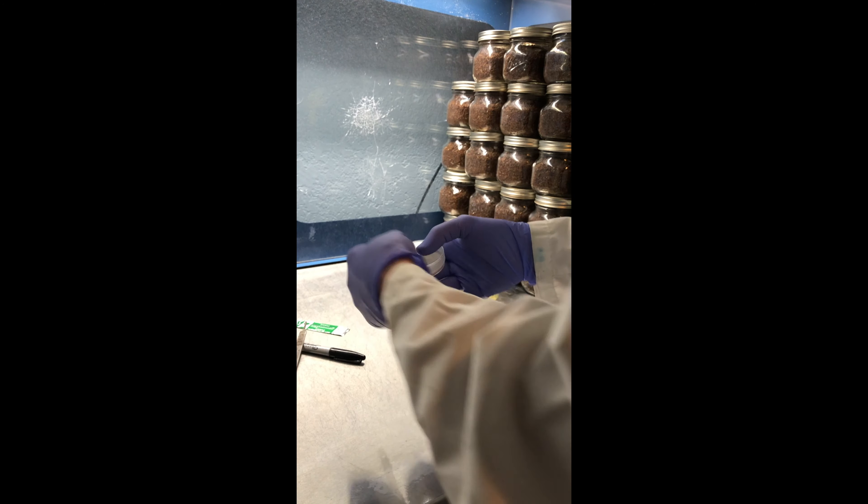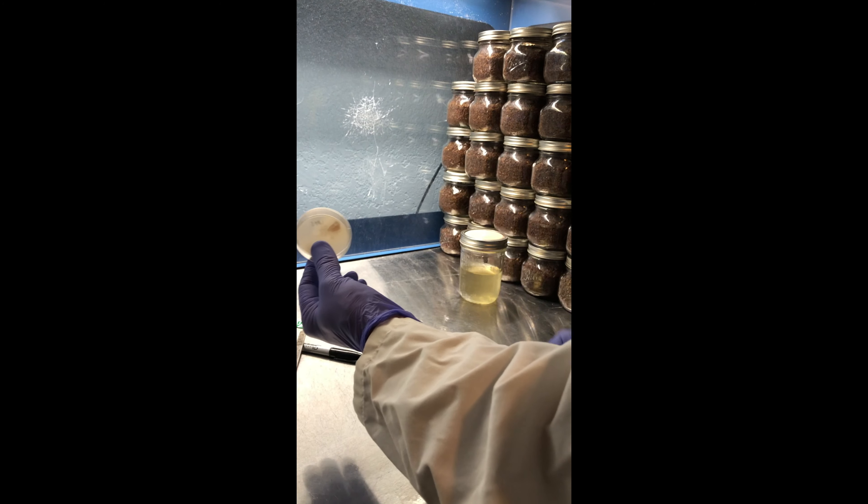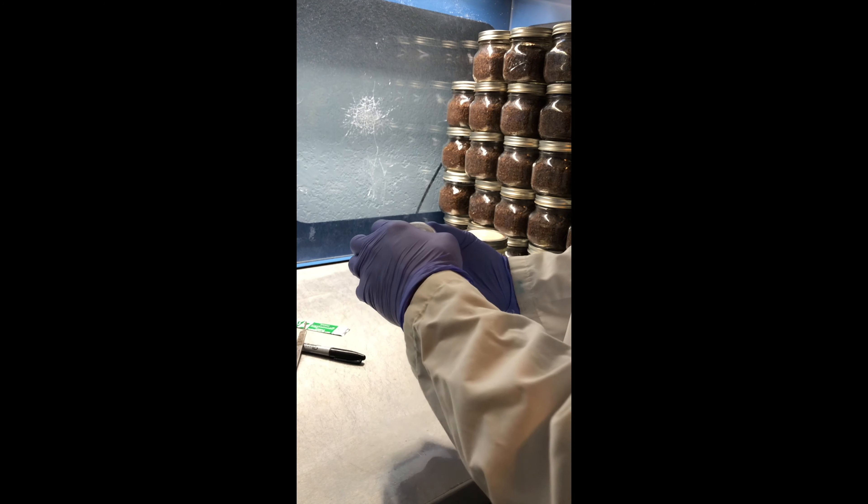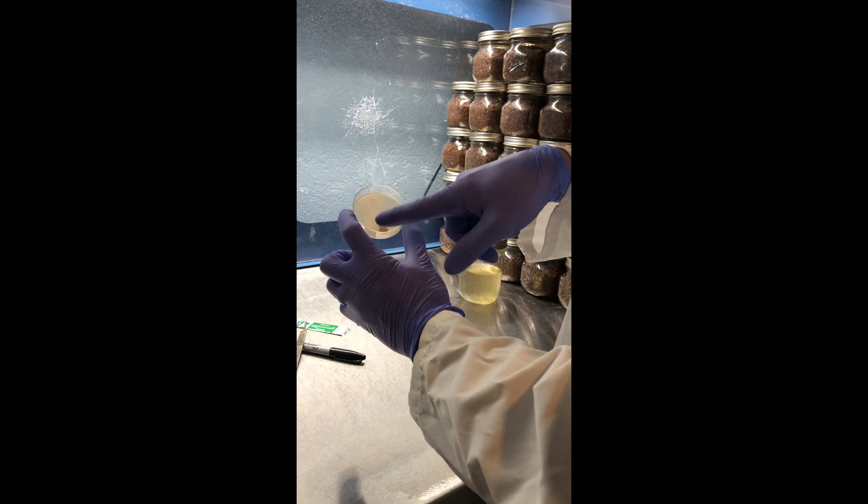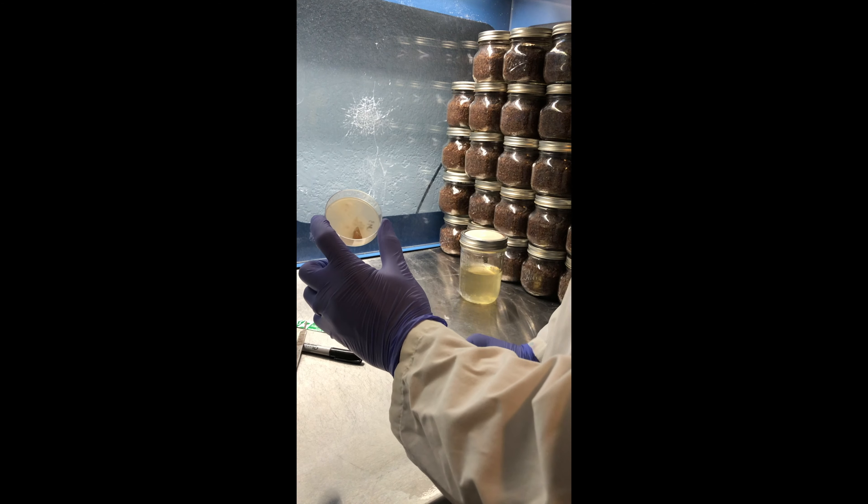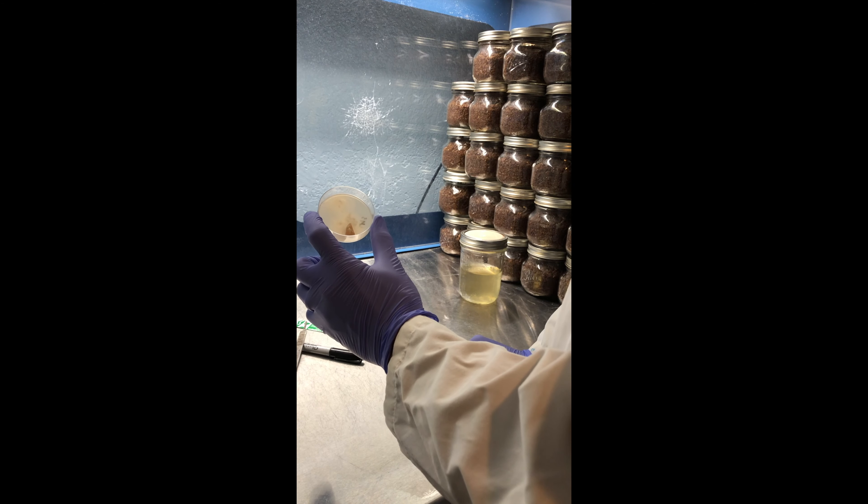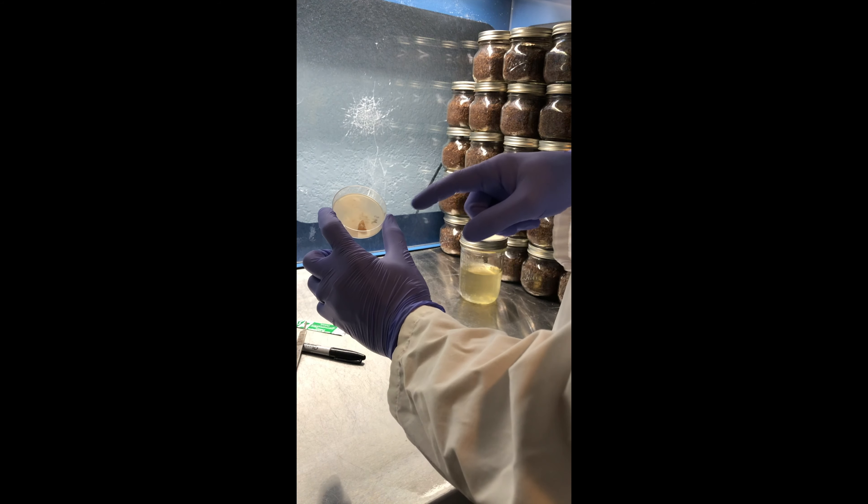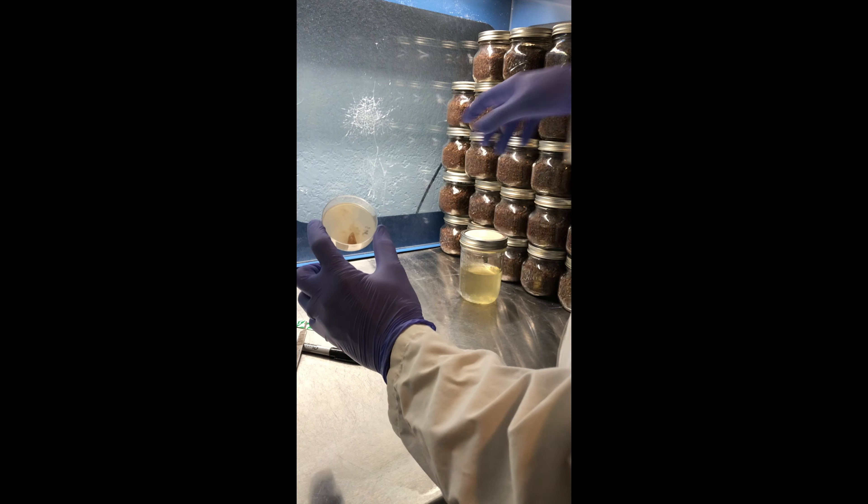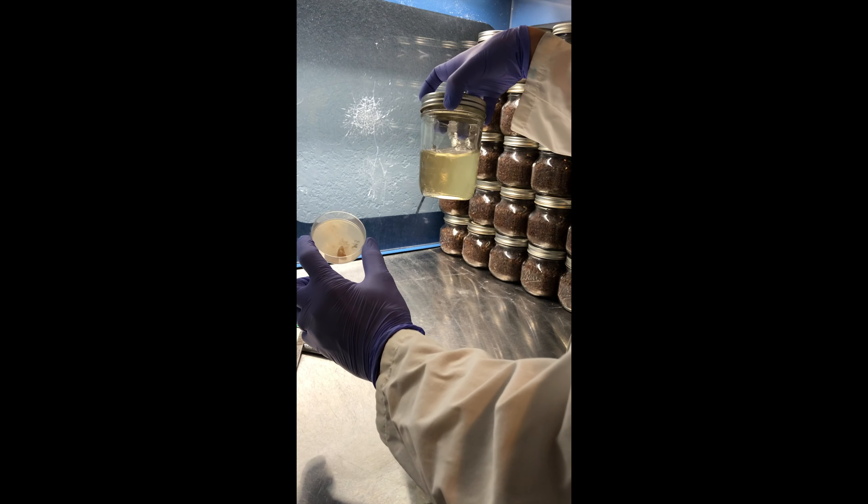So this Lion's Mane has been growing for about six days. I don't know if you can see real good, but there's some really clear edges, and that's what we're going to be going for. It's the most sterile part of the plate culture. So we're going to take a couple slices off the edge and mix it into this honey culture.